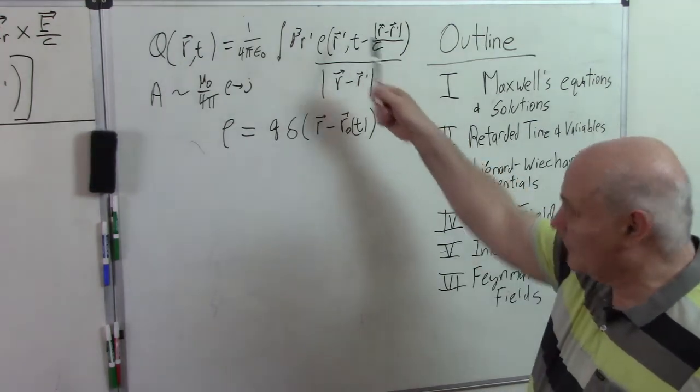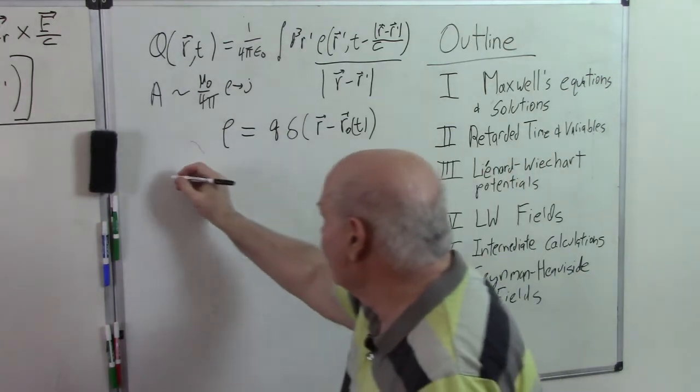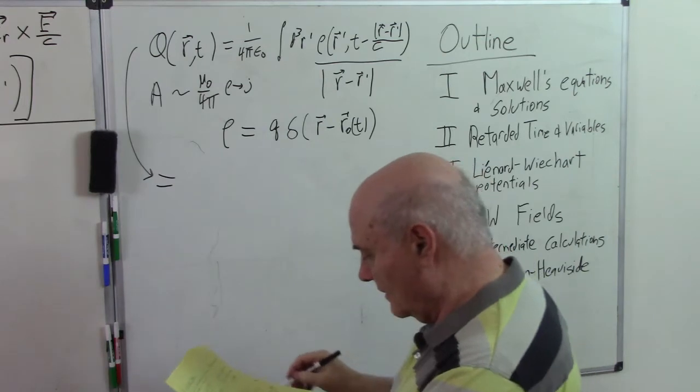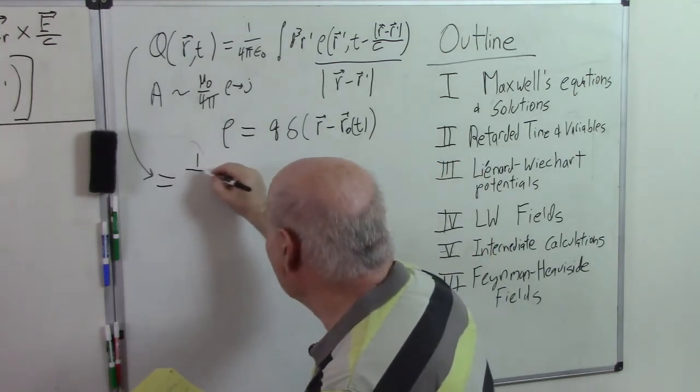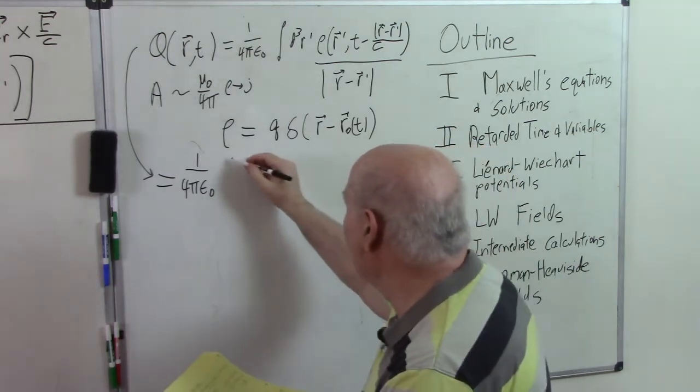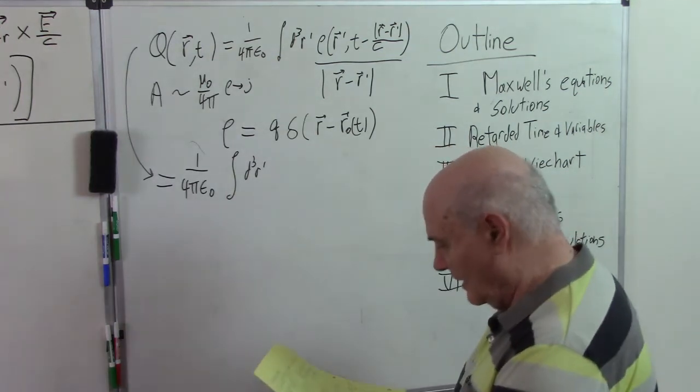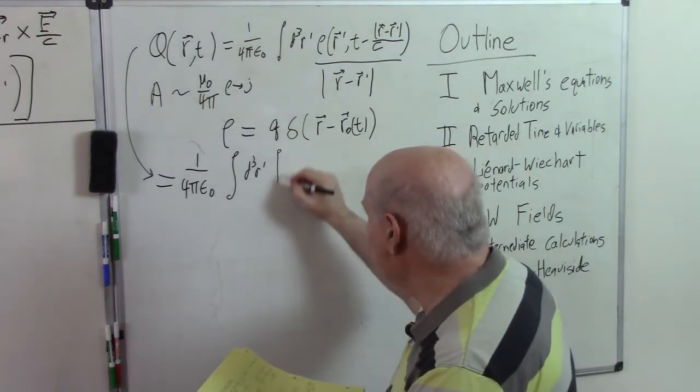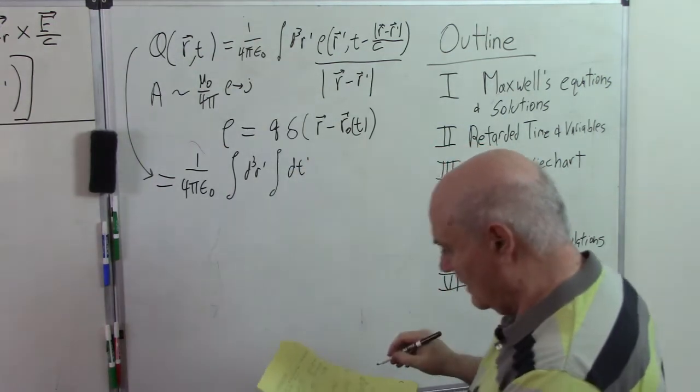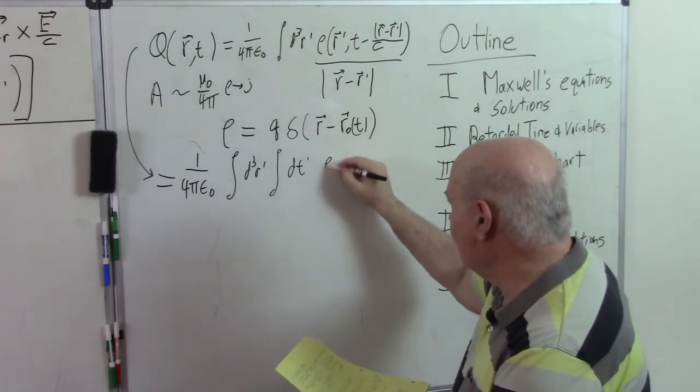The way to evaluate this potential is to complicate it a little at first. So we're going to write it down. 1 over 4π epsilon_0, the integral of d³r'. And now I'm just going to put an added variable here, t', the integral of t'. So we're sort of adding another integral, but we'll see how that works.